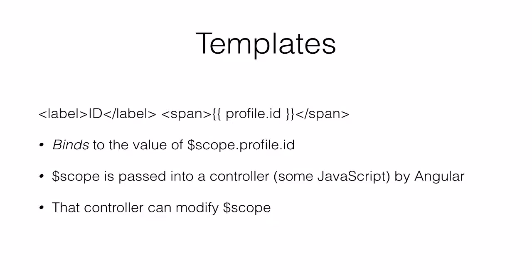Let's move on to templates. Here at the top is a very simple example: some HTML with a label containing the text 'ID' and a span with profile.id in curly braces. What appears inside that span is the value of $scope.profile.id. The $scope object is created by Angular.js and passed into our controller function. When we define a directive, we declare that it needs a new $scope object to bind things onto. Our controller can modify that $scope — for example, setting $scope.profile to an object with an ID so it will appear in the template.